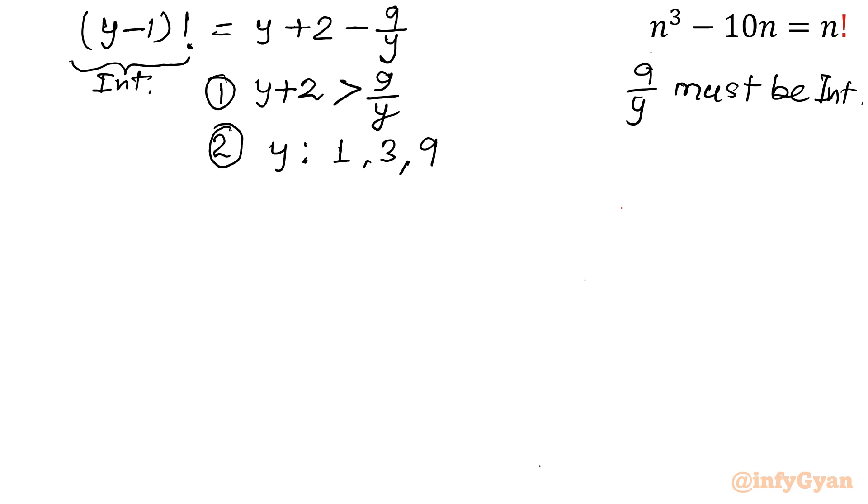So y may have values 1, 3, and 9. Because 9/y must be integer. So if I put y = 1, then 9/y would be integer 9. If I'm putting 3, then it would be integer 3. If I'm putting y = 9, then 9/y will be equal to 1, which is integer. So possible values for y will be 1, 3, and 9.